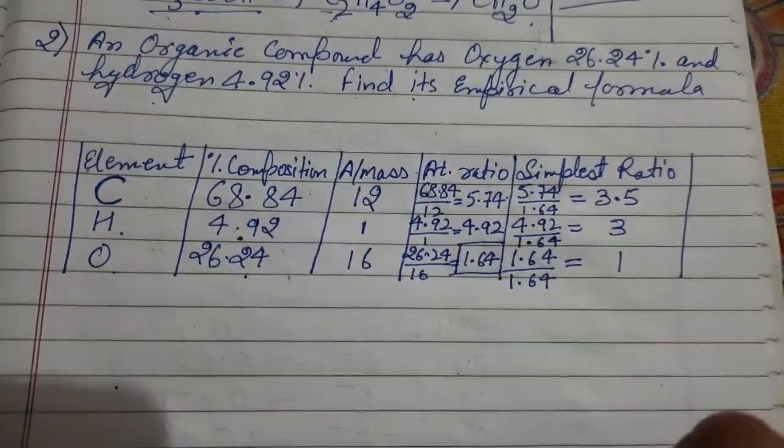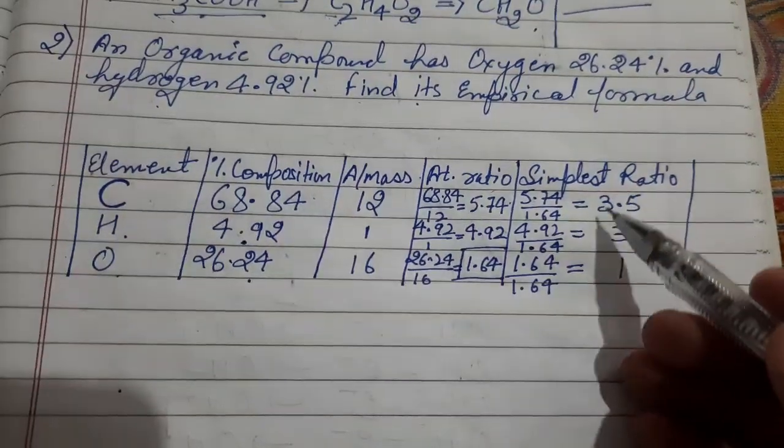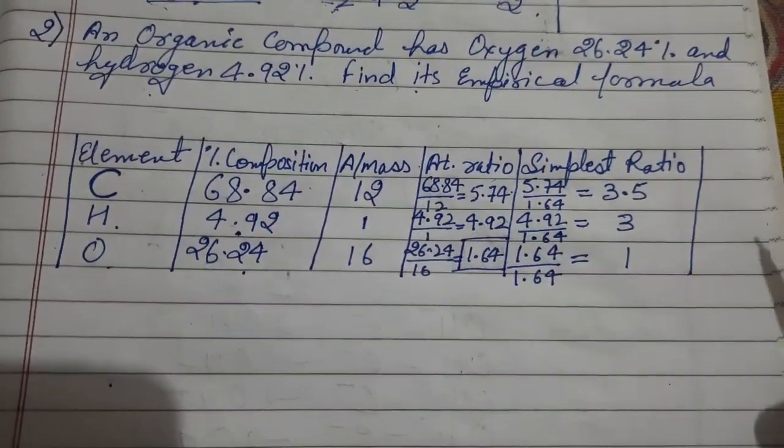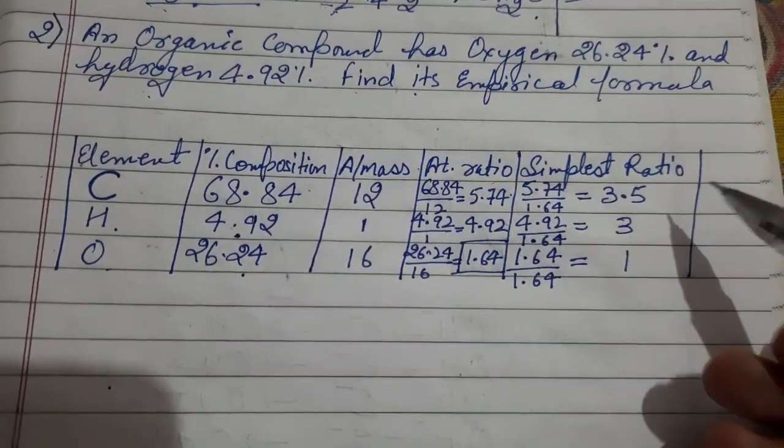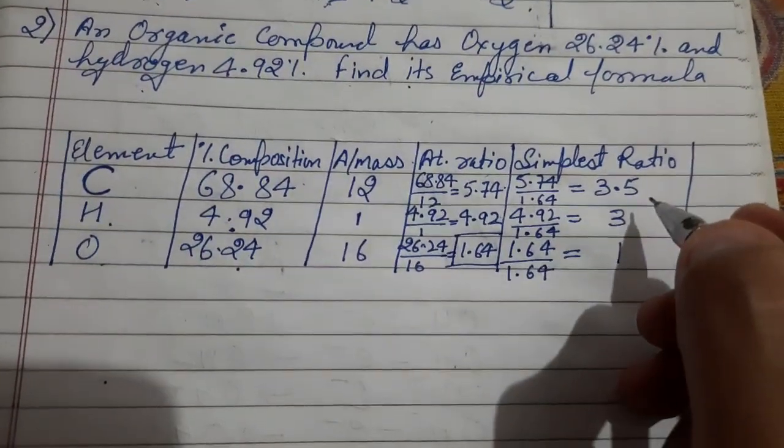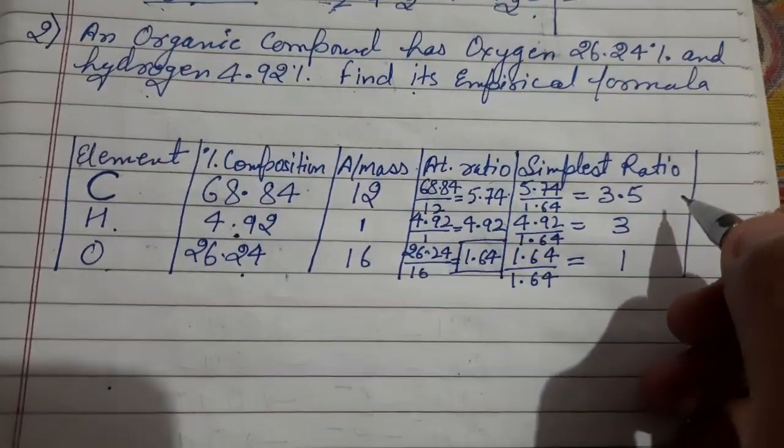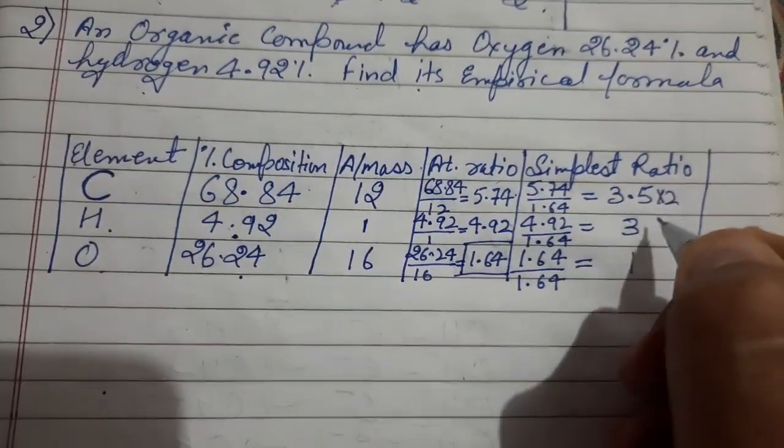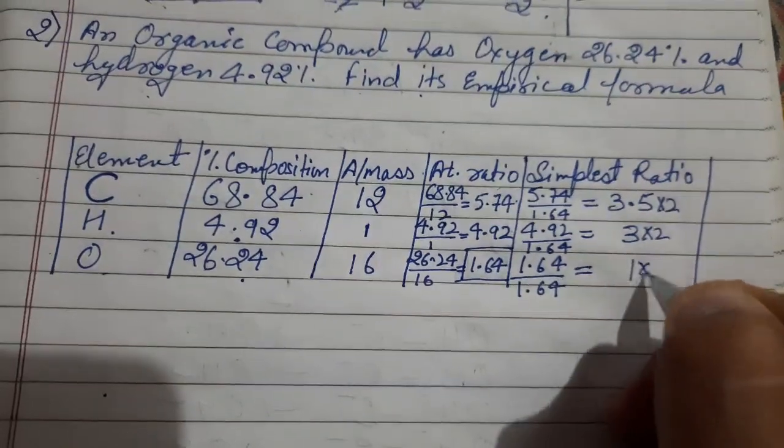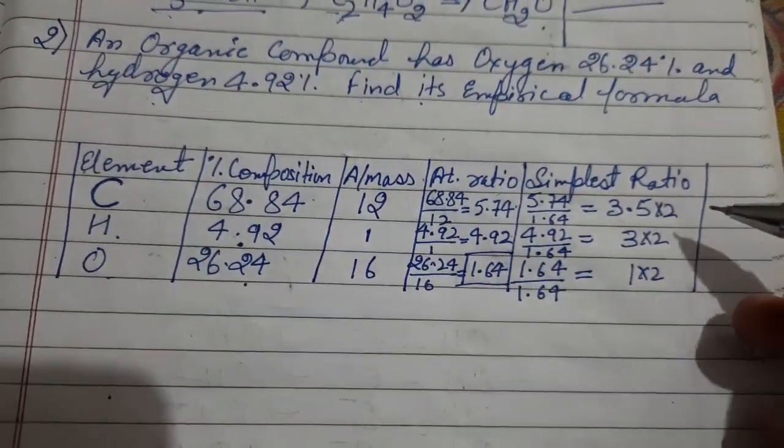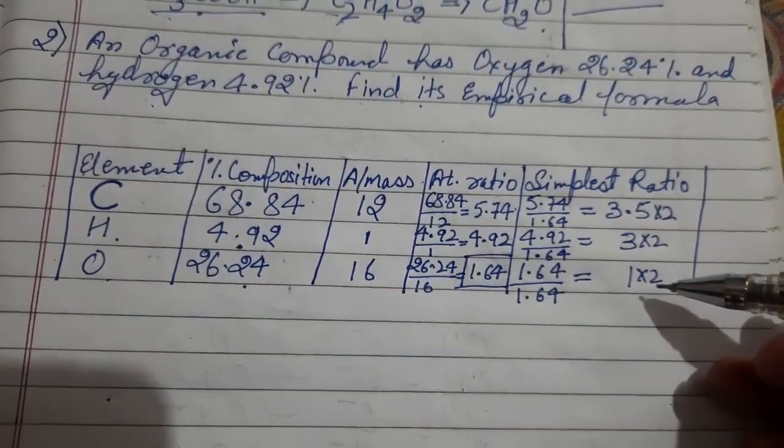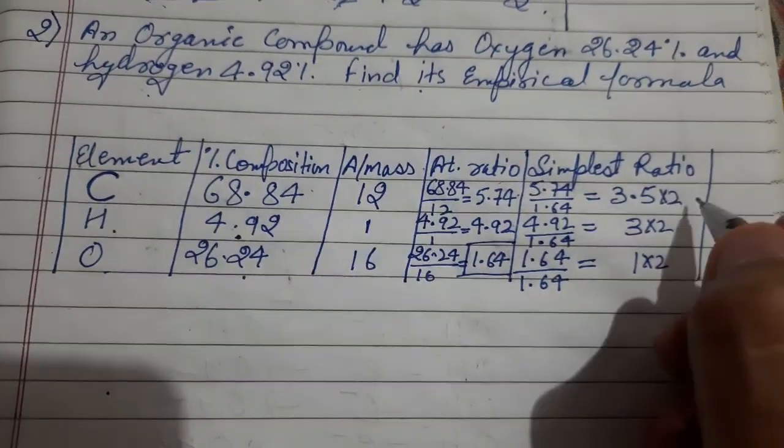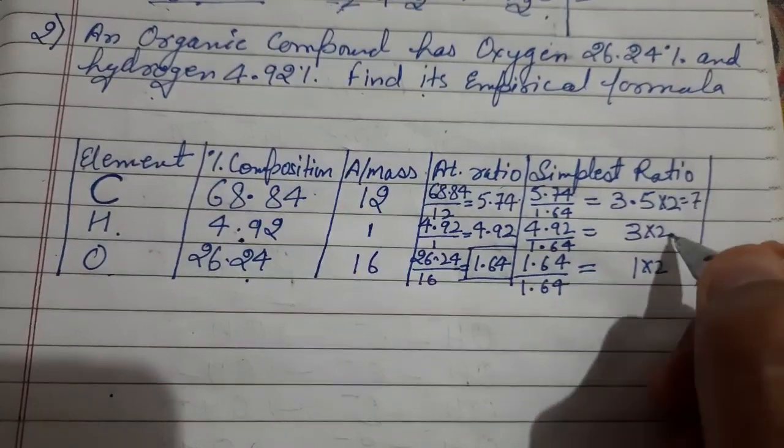So what we have to do, we have to multiply all these numbers with the shortest possible number so that these points can be removed. If we will multiply it with 1, same number is going to come, so better we will multiply it with 2 here, also with 2 here, also with 2. Remember this thing: the multiplication number should be same everywhere. And it will be 7, it will be 6, it will be 2.